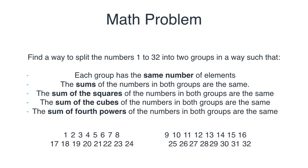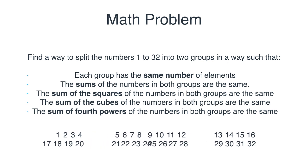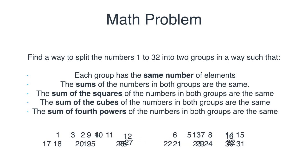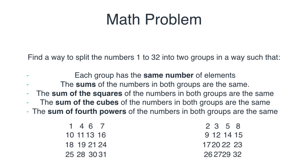I mean, here's a way to split them, but that obviously doesn't satisfy them. Here's another way. Here's another way. And the actual solution, I'll spoil it, is this one. These two groups have the same sum, the same sum of squares, sum of cubes, and sum of fourth powers. But let me show you how I got to the solution.